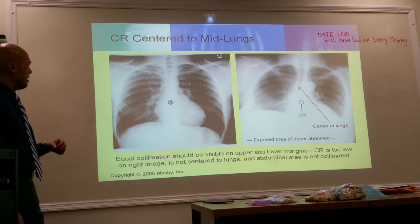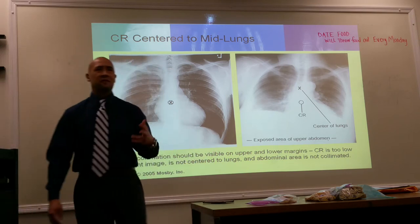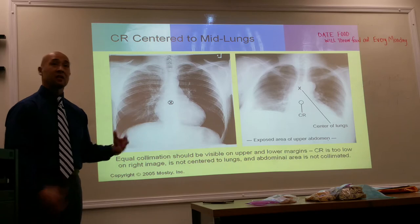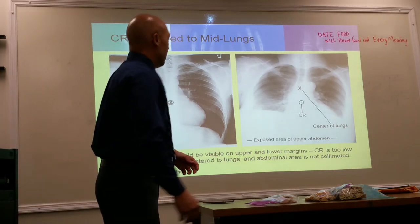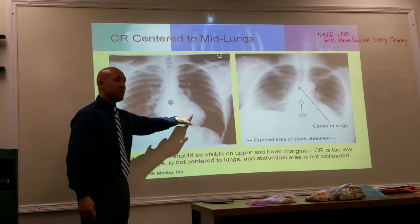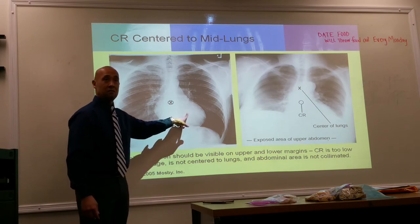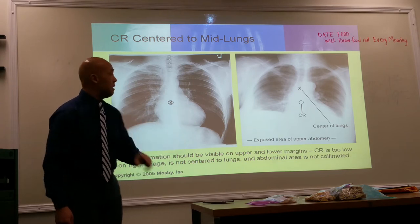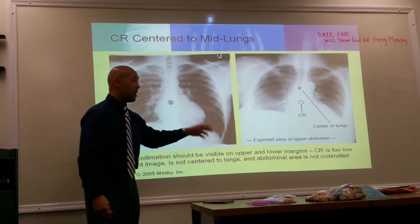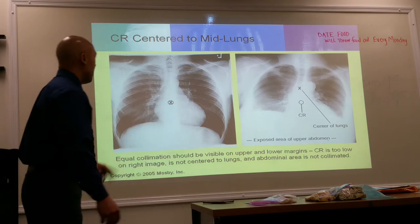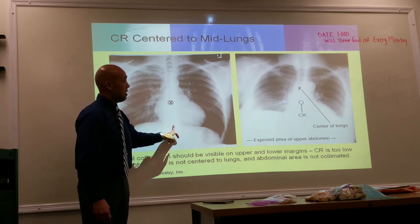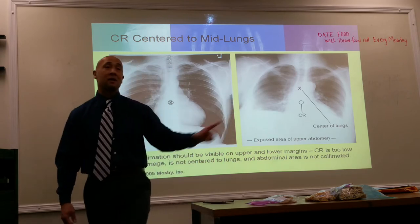Evaluating a chest x-ray: first, do we have enough air in the lungs? You can look at it and tell — the lungs look very short if there aren't ten posterior ribs visible. Also, on a good chest x-ray, you need to be able to see through the heart or behind the heart, and you should see some thoracic spine. If you can't see behind the heart or see thoracic spine, the KV was probably too low.